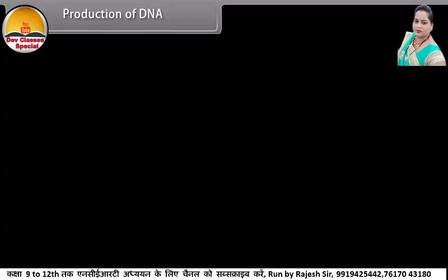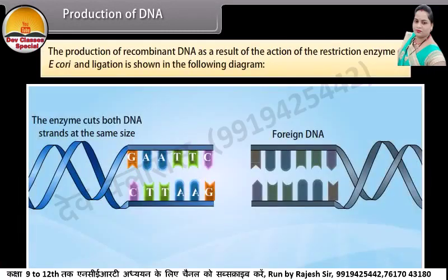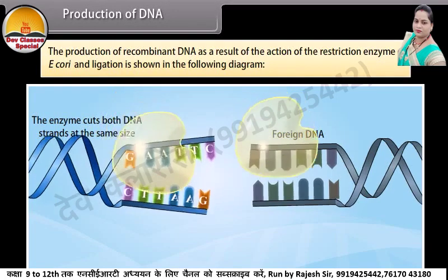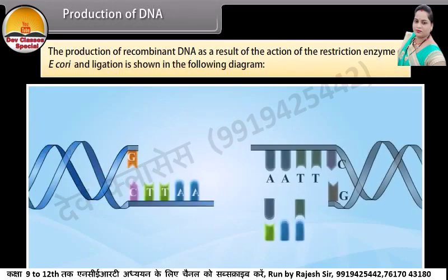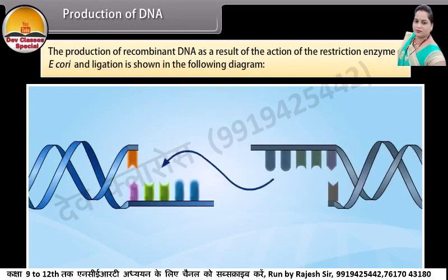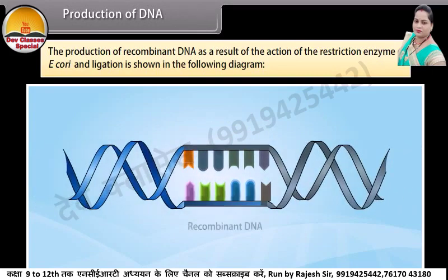The production of recombinant DNA as a result of the action of the restriction enzyme EcoRI and ligation is shown in the following diagram. The enzymes cut both DNA at the same site. After that, both DNA fragments can be joined at the sticky ends and it results in a recombinant DNA.